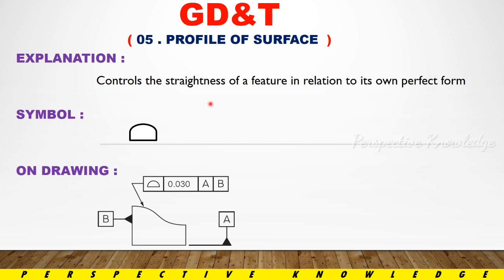We have a regular profile — that is a flat surface, or a cylindrical profile, or a circle, or a cone. We can make that feature easily. But suppose we have an irregular profile; in that case, we have to use a profile of surface.